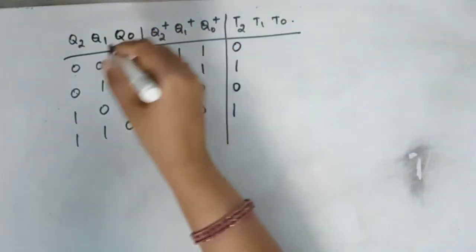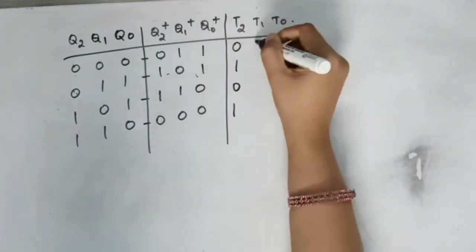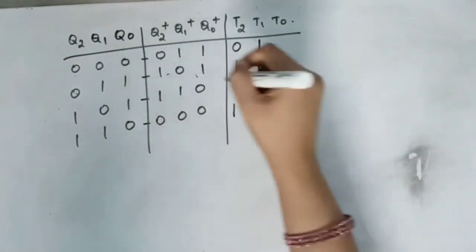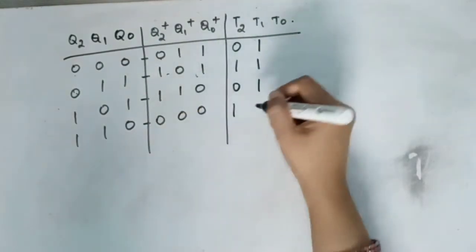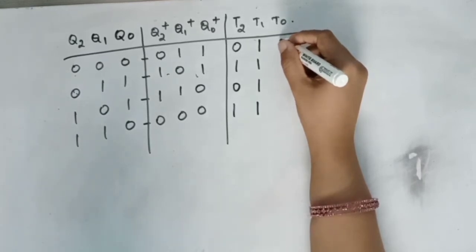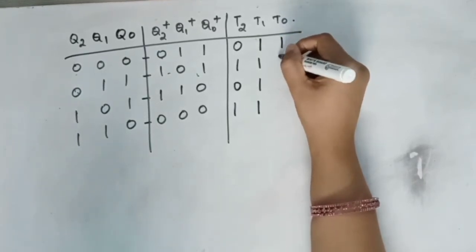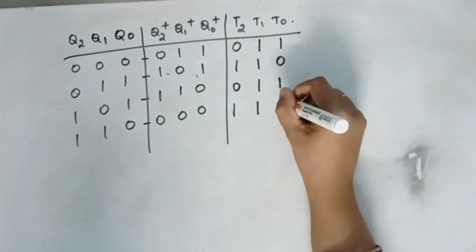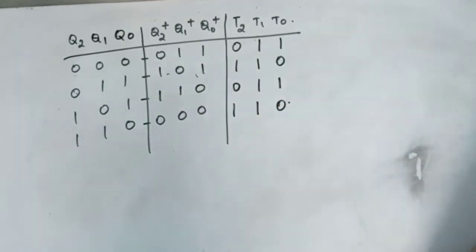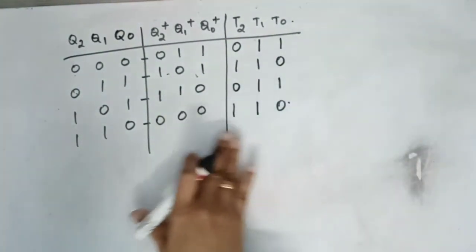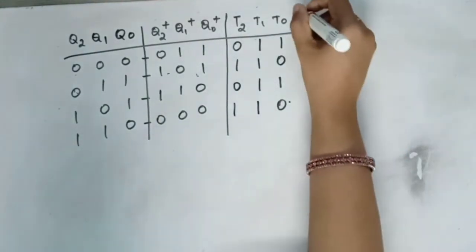For T1, looking at Q1 and Q1-next: 0→1 is 1; 1→0 is 1; 0→1 is 1; 1→0 is 1. For T0, Q0 and Q0-next: 0→1 is 1; 1→1 is 0; 1→0 is 1; 0→0 is 0; then 0→1 is 1. Then draw the K-map for T2, T1, and T0.